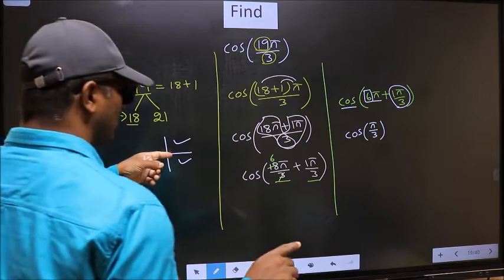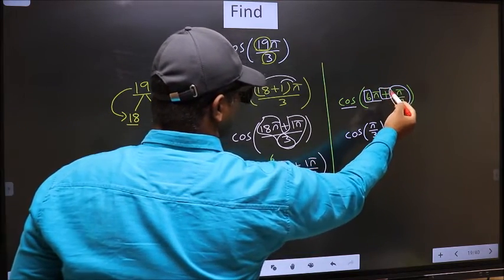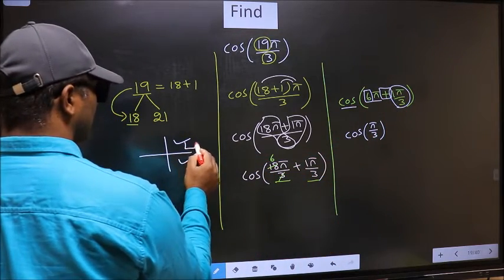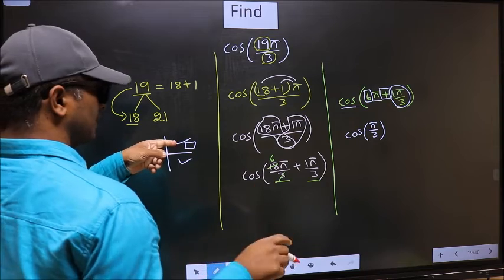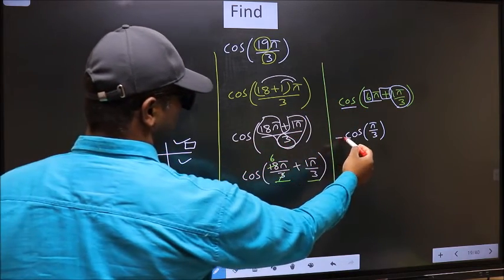So now to select the quadrant, we should look at this symbol. Here we have plus. So the angle lies in the first quadrant. And in the first quadrant, cos is positive. So we should put plus.